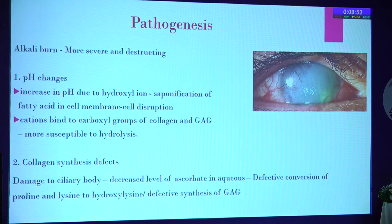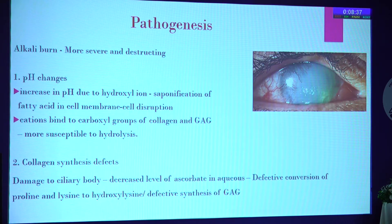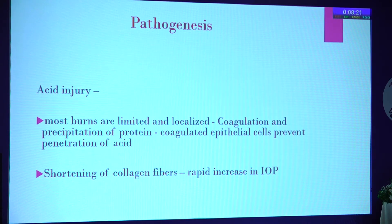The increase in pH causes saponification of the membrane lipid. This leads to greater penetration into the ocular tissue, and if it reaches the ciliary body — which is the source of ascorbic acid essential for collagen formation and the reparative process — the reparative process is going to get affected. On the other hand, acids, when they come in contact with proteinaceous agents, form a coagulum which actually restricts further penetration into the ocular tissue.